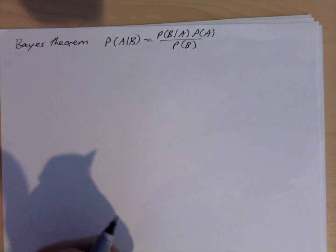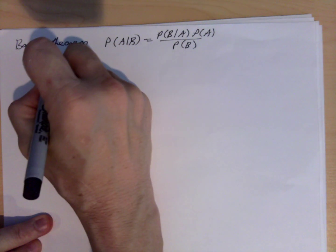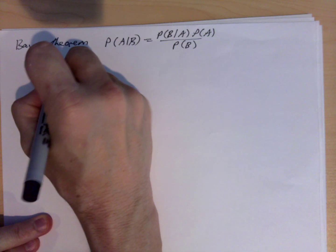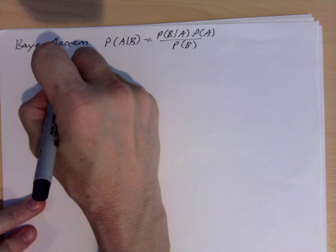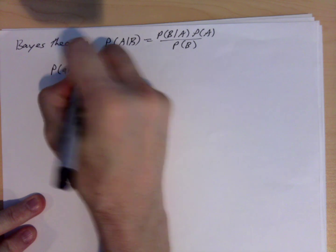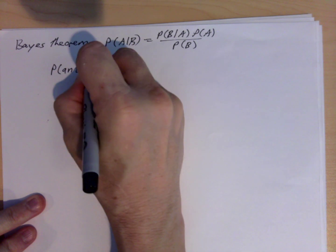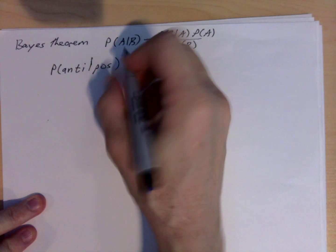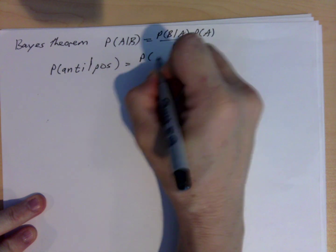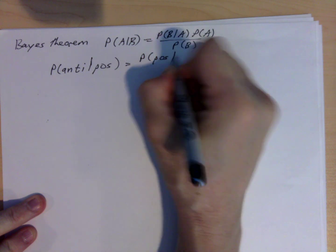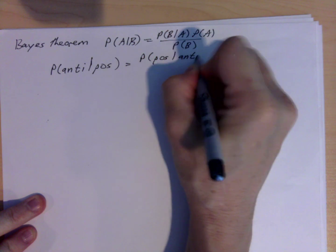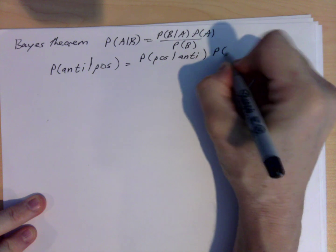And so in terms of what we're doing here, that translates into what is the probability that a person has antibodies given that they test positive for antibodies, which is equal to the probability that they test positive for antibodies given that they actually have antibodies times the probability that they have antibodies divided by the probability they test positive for those antibodies.